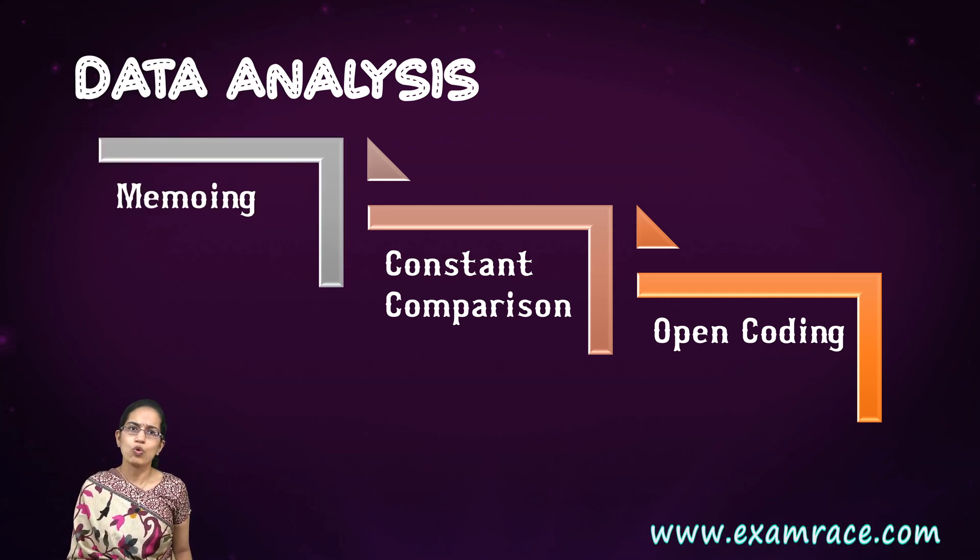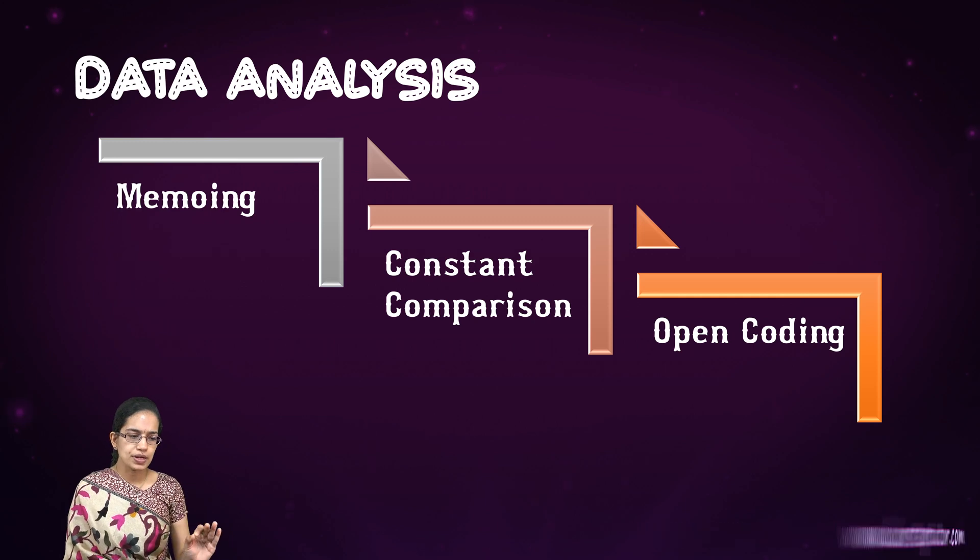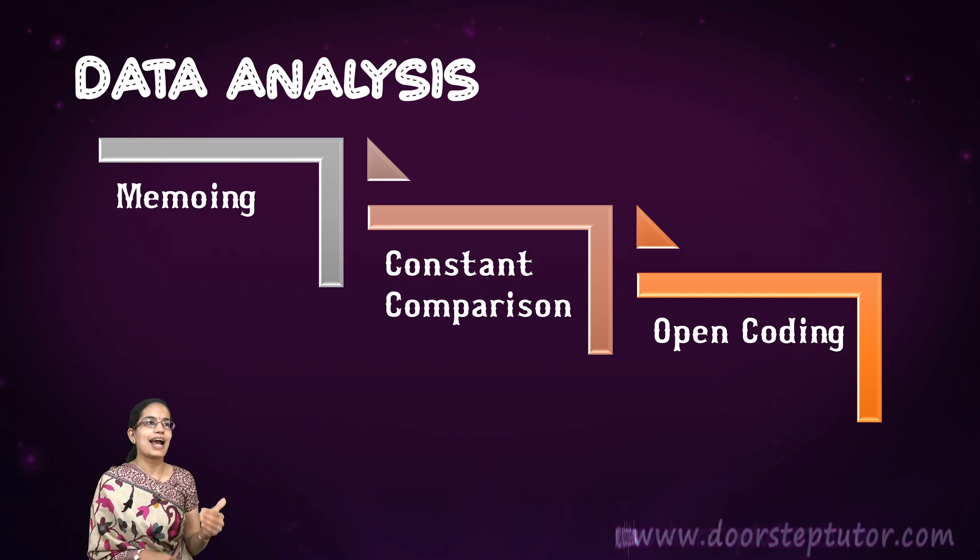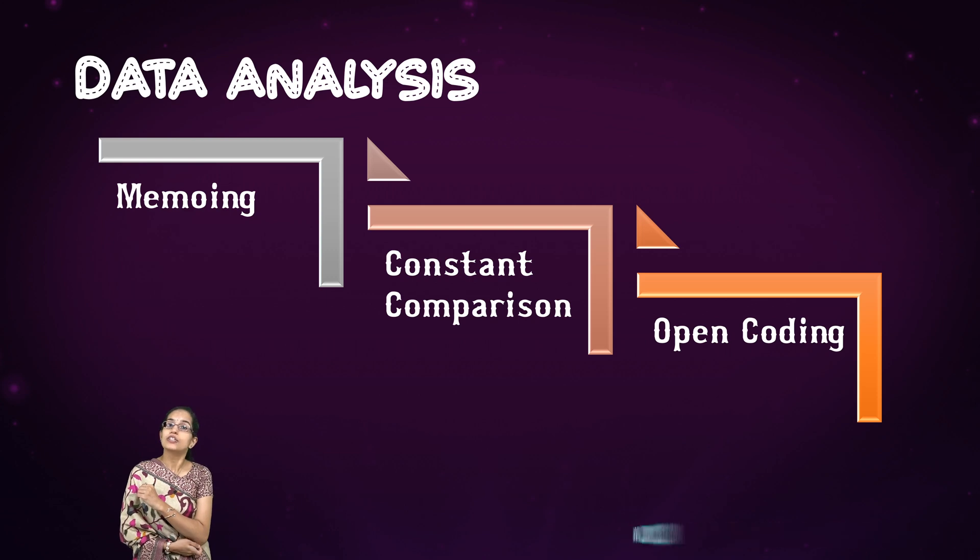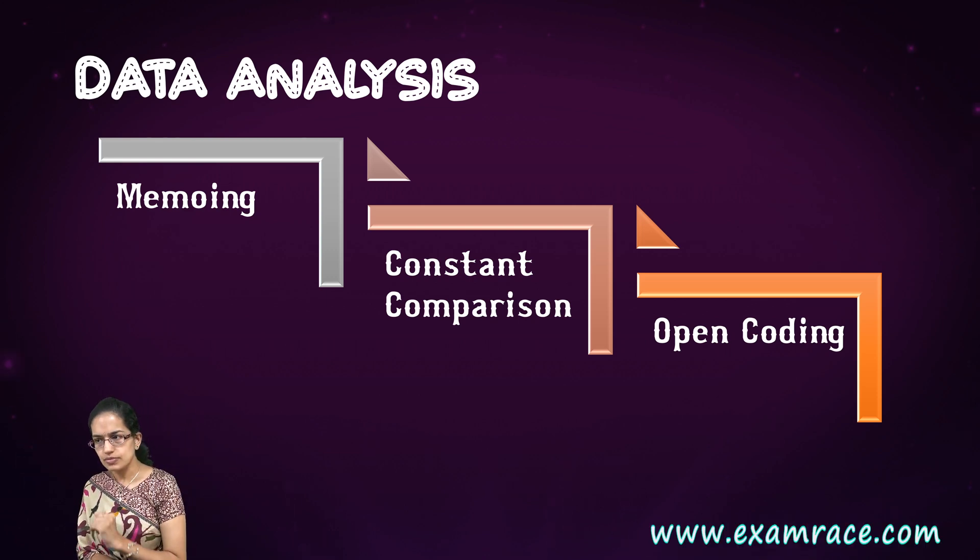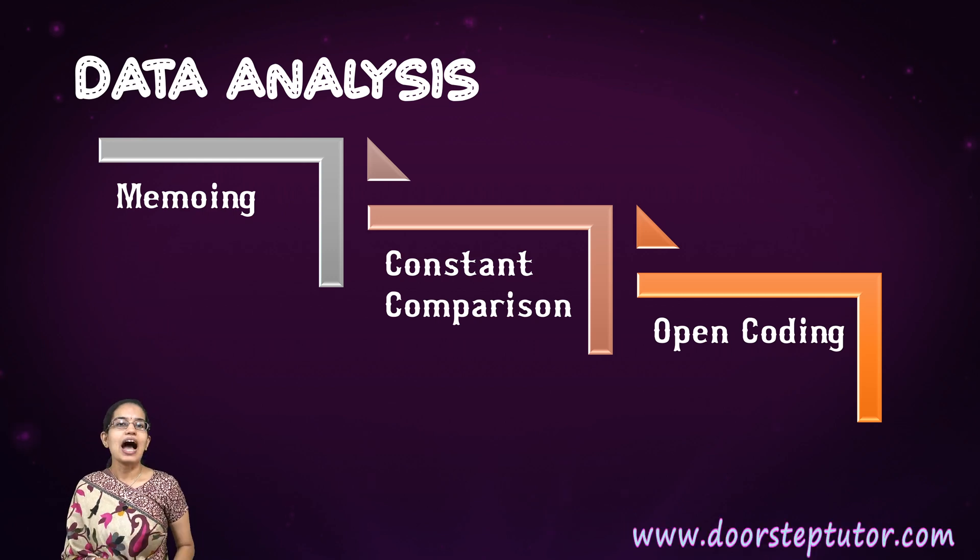We create a new category if the existing data does not fit into the categories that we made. Finally, we have memoing. What is memoing? Memoing simply means how these categories can explain the process of being a topper, and that is the process of memoing.